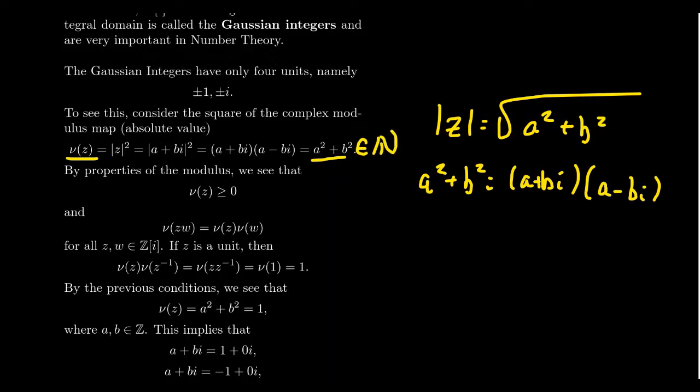And no stipulation on the numbers a and b needs to be here, this is just how the number i works. And so in particular, if you take the norm of a Gaussian integer, this will give you a sum of squares of integers, so in particular it'll be a non-negative integer. I guess it could be zero of course, it could be a natural number if z is zero itself, but if z is a non-zero Gaussian number, then its modulus will be a positive integer. So in particular, nu of z is always greater than or equal to zero.